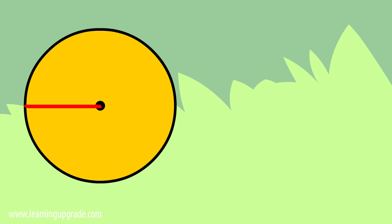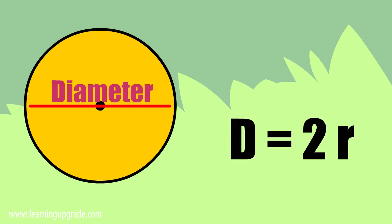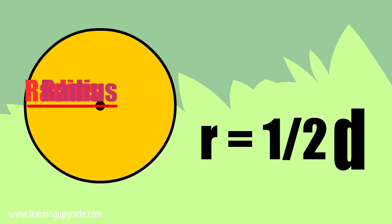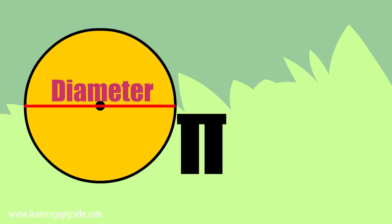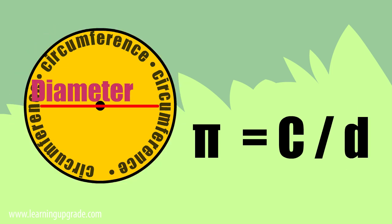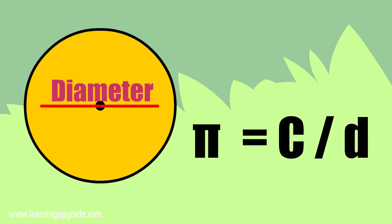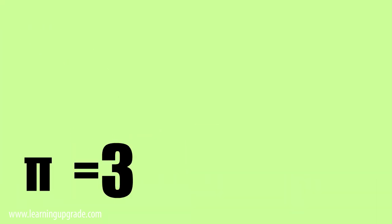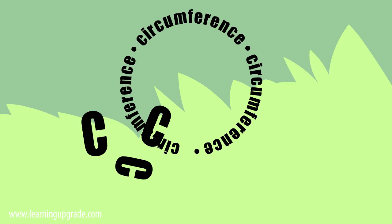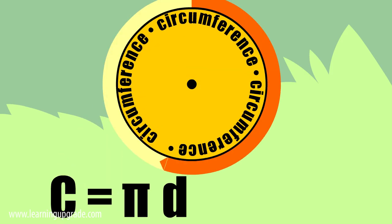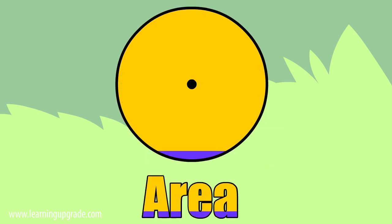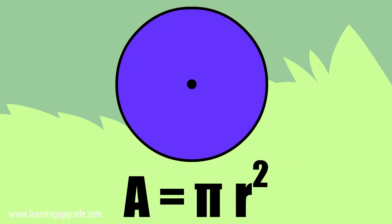Diameter D is twice the radius. Radius R is half the diameter. Pi is circumference C divided by the diameter. Pi is approximately 3.14. Circumference is pi D or 2 pi R. Area is pi R squared.